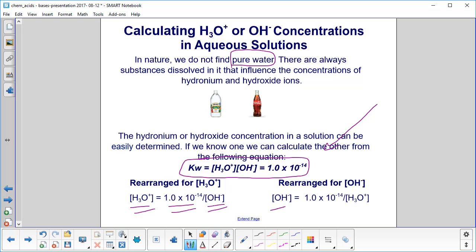And if we want to rearrange it for the hydroxide ion, well, same thing mathematically. You've got the constant up here divided by the concentration of the other guy.